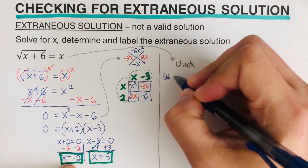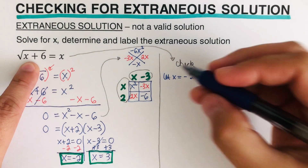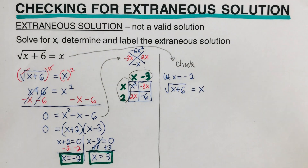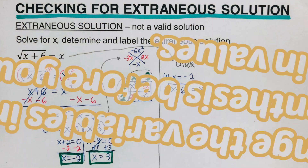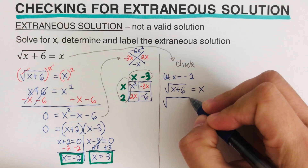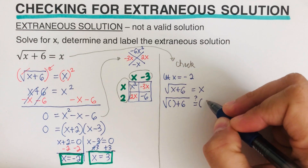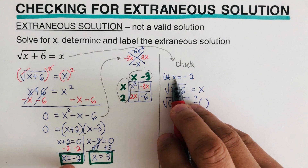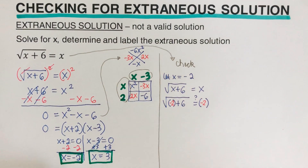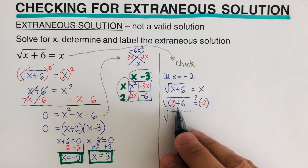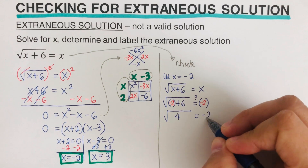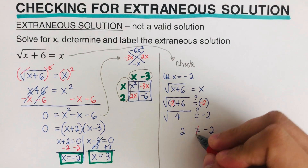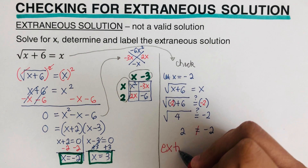First, we let x equal negative two. We rewrite the equation: square root of x plus six equals x. The trick when checking is to change the variable into a parenthesis before plugging in values. So we get: square root of (negative two) plus six equals (negative two). That simplifies to square root of four equals negative two, which gives two equals negative two. That is not equal, so negative two is our extraneous solution.